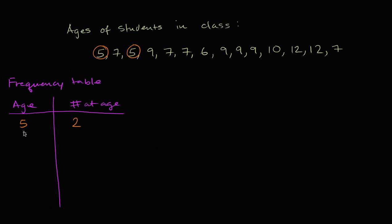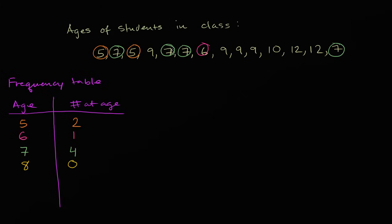Now let's go to six — how many sixes are there? There's only one six-year-old in the class. Seven-year-olds: there's one, two, three, four seven-year-olds. What about eight-year-olds? We have no eight-year-olds — zero. And then nine-year-olds: we have one, two, three, four nine-year-olds.